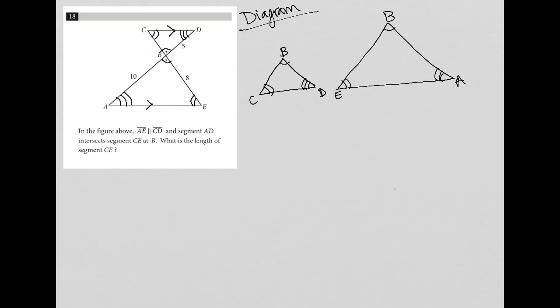So what do we know about side lengths? Well, from B to D is 5, and from B to A is 10, and the length of B to E is 8. Therefore, the length of B to C would be 4 because we see this ratio here between 5 and 10.